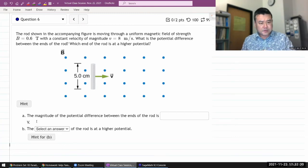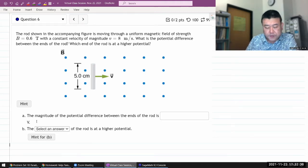All right. So this question says, the rod shown in the accompanying figure is moving through uniform magnetic field of some magnitude with some constant velocity V. What is the potential difference between the ends of the rod? Which end of the rod is at a higher potential?